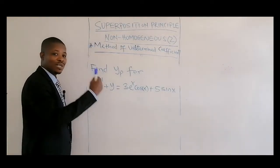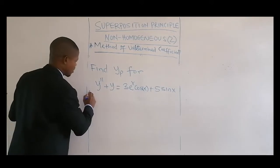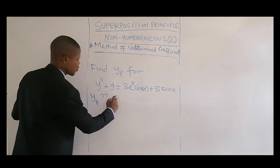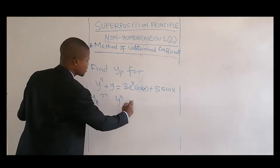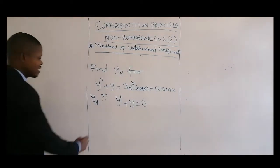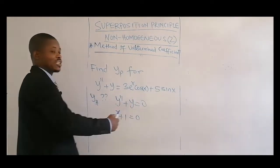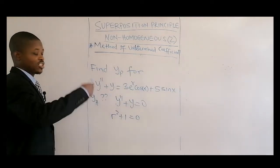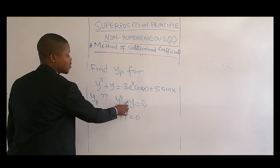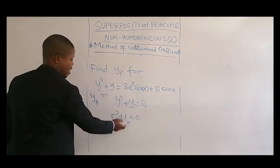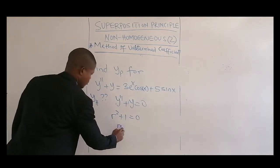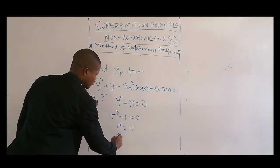Then after that, get the particular solution. We're going to get y_h. Solving for the homogeneous part by equating to zero. The auxiliary equation — we force the first derivative to be R and the second derivative to be R squared. The one without a derivative, we only write the coefficient attached to y, plus one.